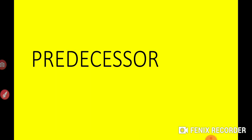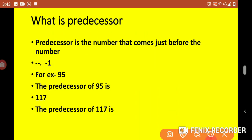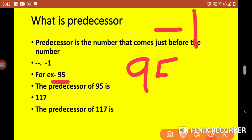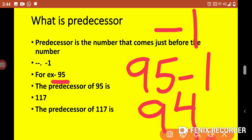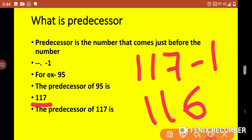Now, predecessor. Predecessor is the number that comes just before a given number. For predecessor, you subtract 1. Suppose I select the number 95 — to find the predecessor of 95, subtract 1, so the predecessor of 95 is 94. If I take 117, the predecessor of 117 is found by subtracting 1, which gives 116. So the predecessor of 117 is 116.